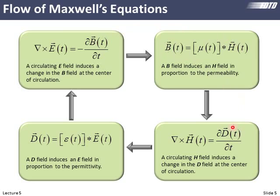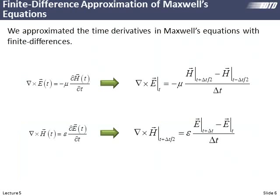FDTD sees this as a discrete sequence of events. The E's and H's are a half-time step apart, so those time steps need to be small enough to resolve our wave phenomenon. We derived finite difference approximations and found we needed to stagger E and H in time so that all terms in our finite difference equations exist at the same point in time and space.